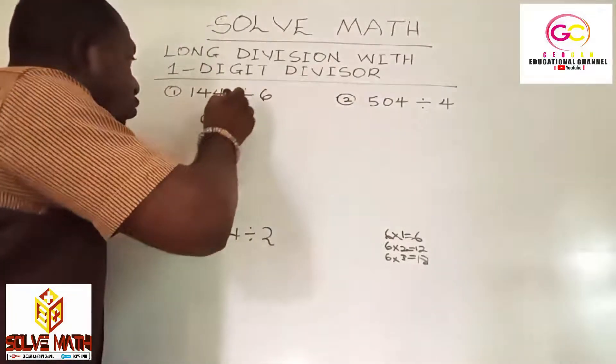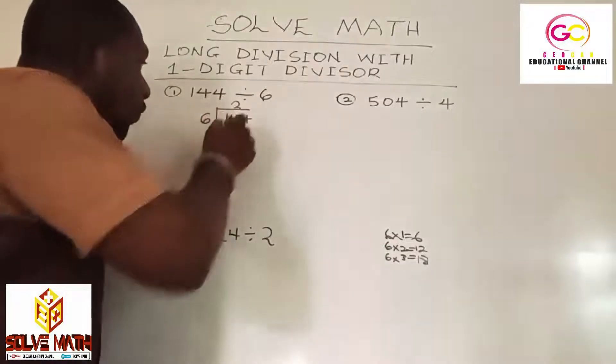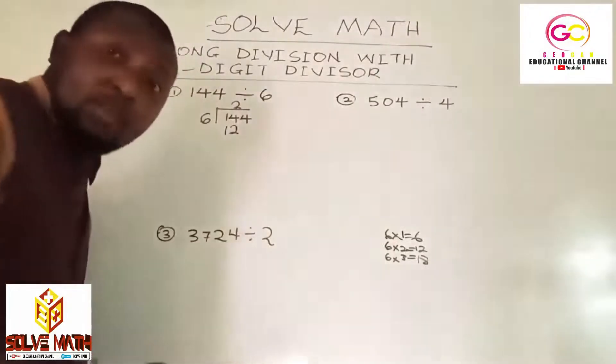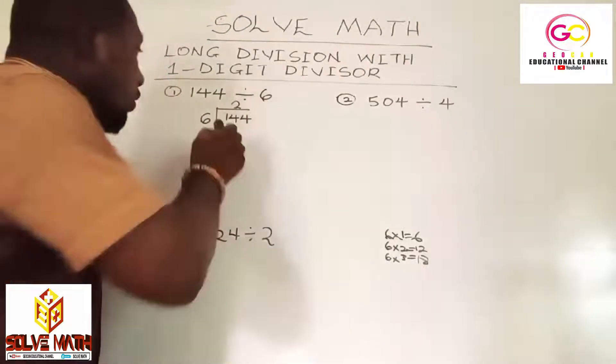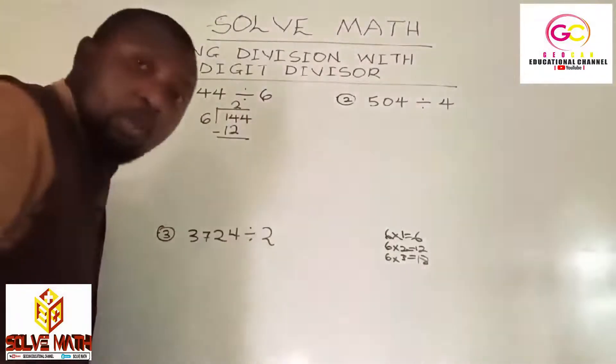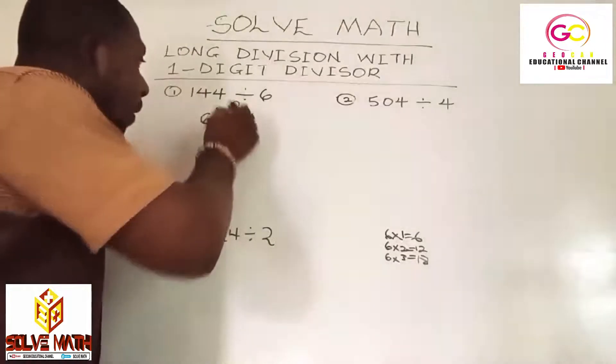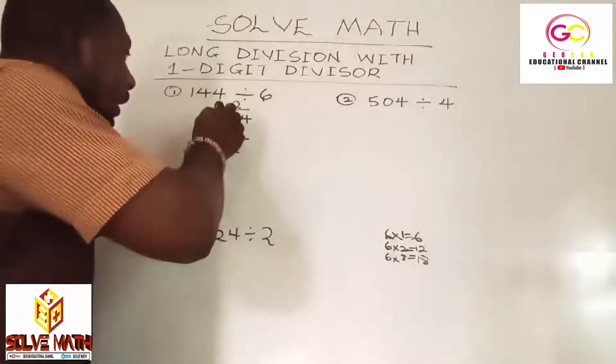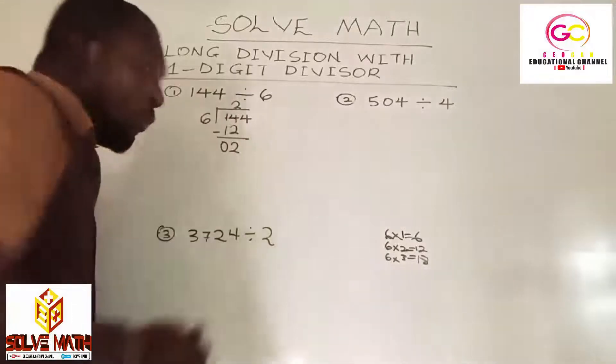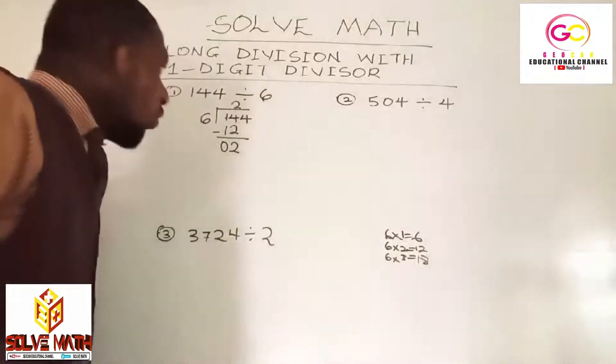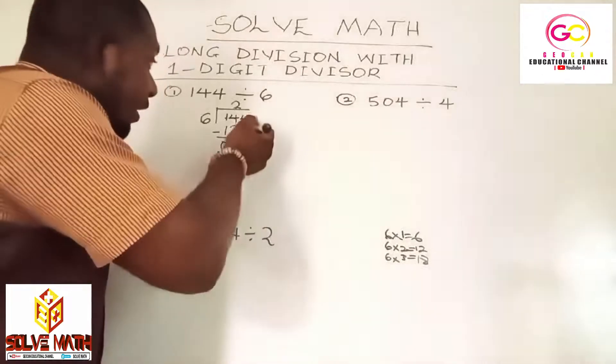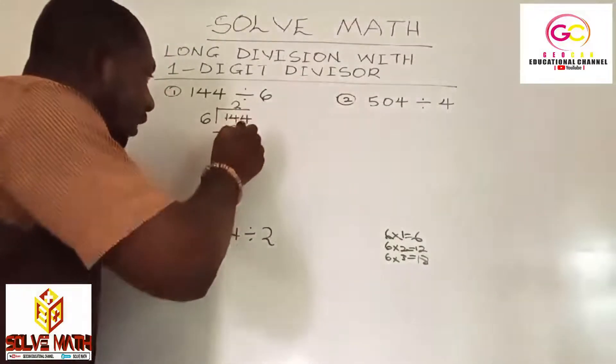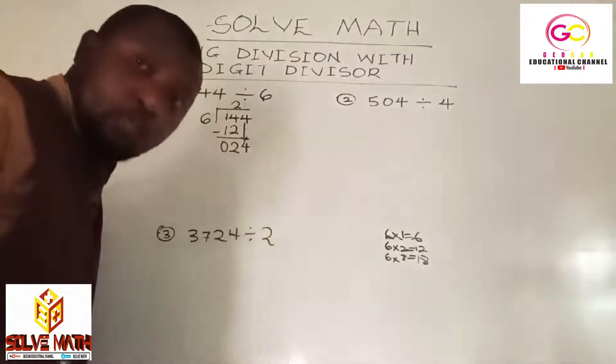So 6 times 2 is 12. I believe you saw when I wrote my 2 on top of the 4, meaning you are using the 14. Quickly do your subtraction: 4 minus 2 is 2, 1 minus 1 is 0. Are we done? No. We have another digit, which is 4. Trace it and join it to the 2.